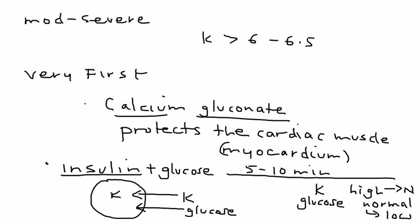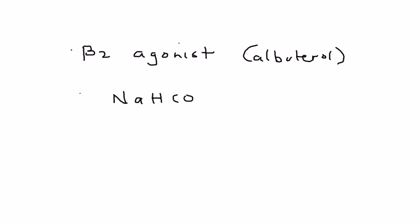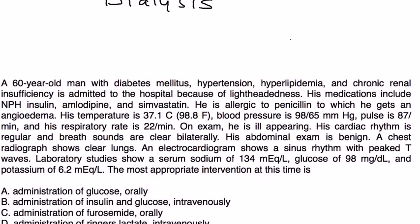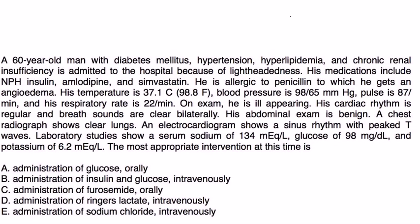There's a few other things that can be given that can reduce someone's potassium level in their bloodstream. A beta-agonist, believe it or not, such as albuterol, can lower potassium levels. Also, sometimes sodium bicarbonate can shift potassium back into the cells. In the most extreme scenarios, when the kidney is completely failed, you would have to give the patient dialysis.